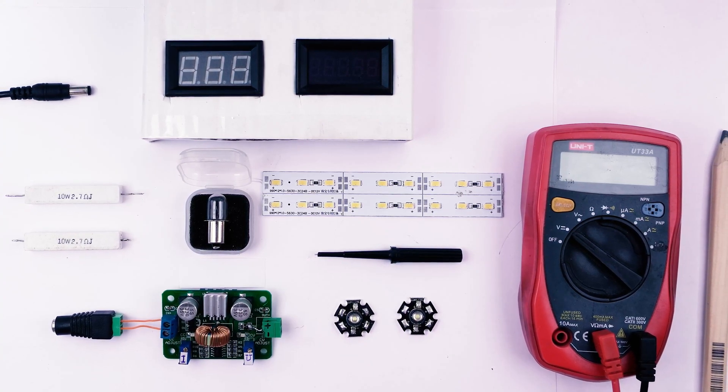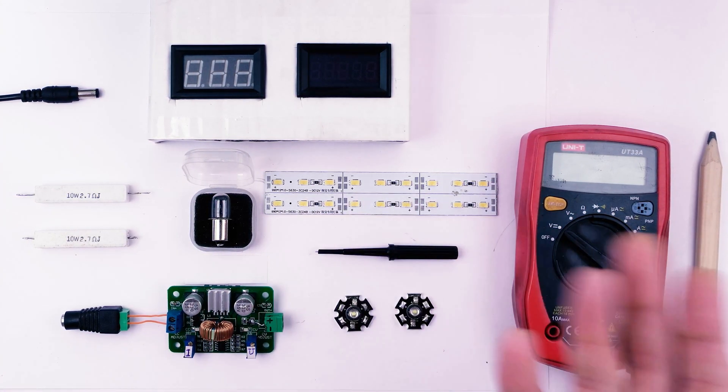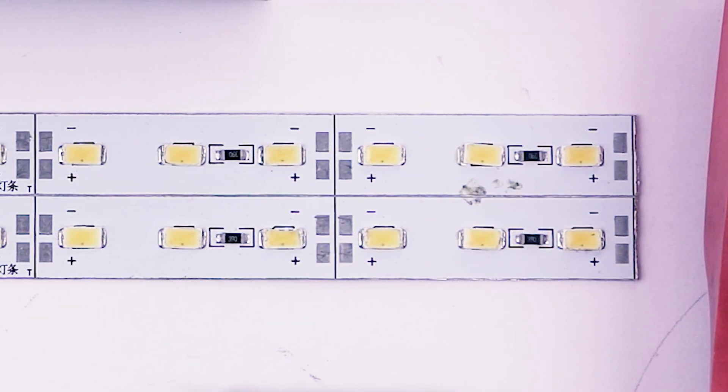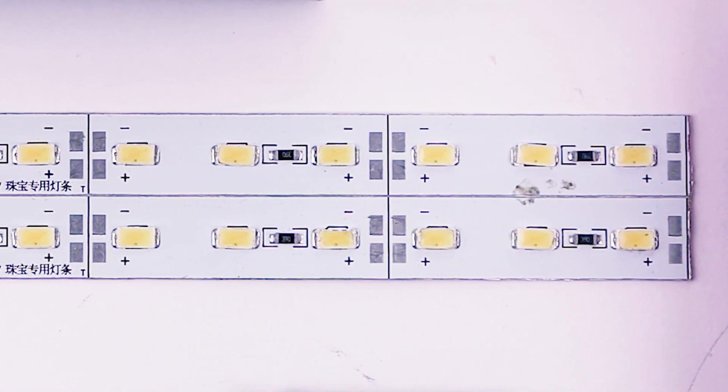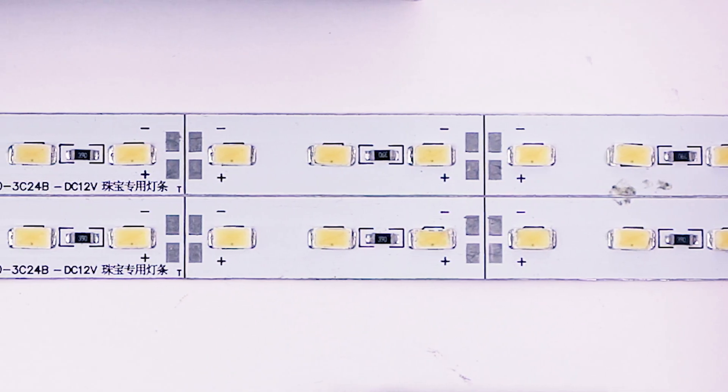Most people understand the concept of voltage. Everybody knows that you cannot power a 12-volt LED strip off a 220-volt outlet. You cannot run it off a AA battery either. Every device has a certain voltage rating specified by the manufacturer, and it must be powered using a supply that outputs exactly this voltage.